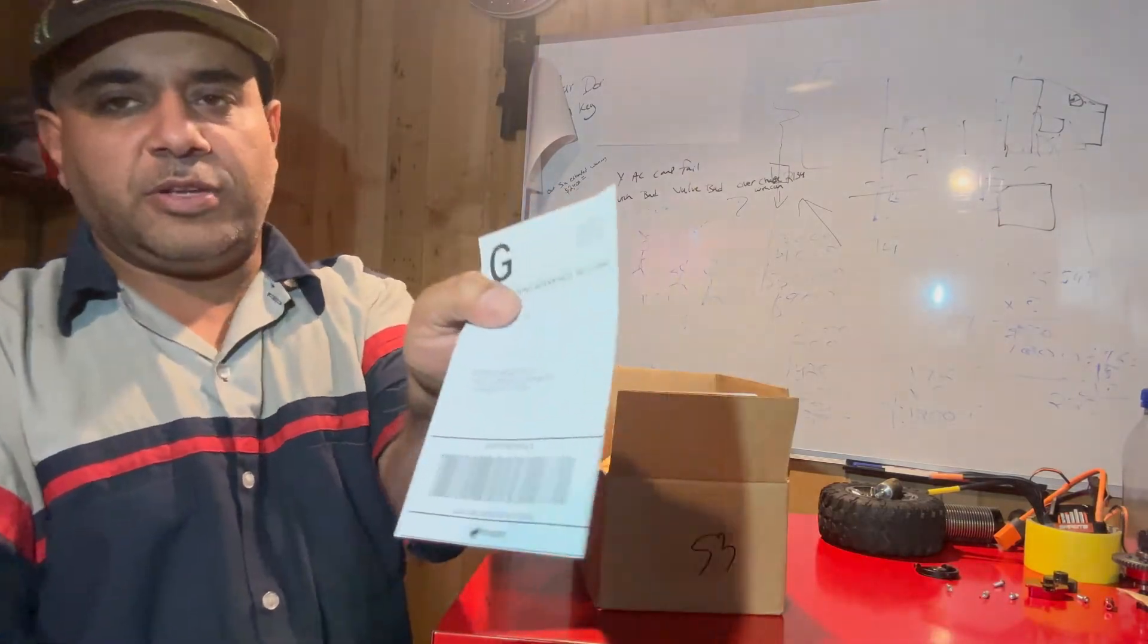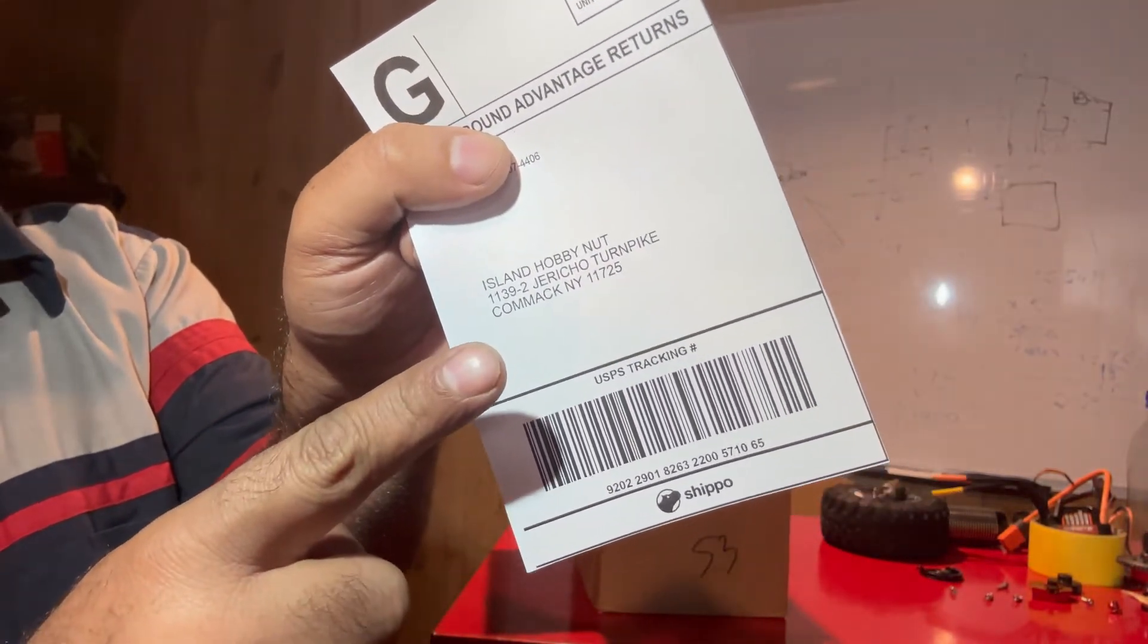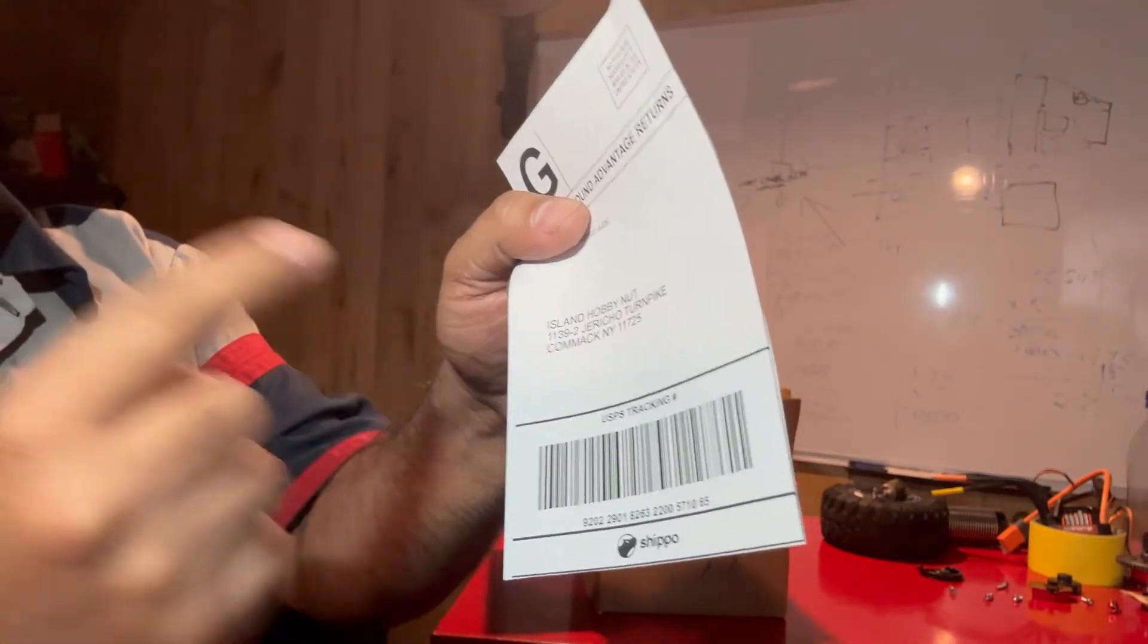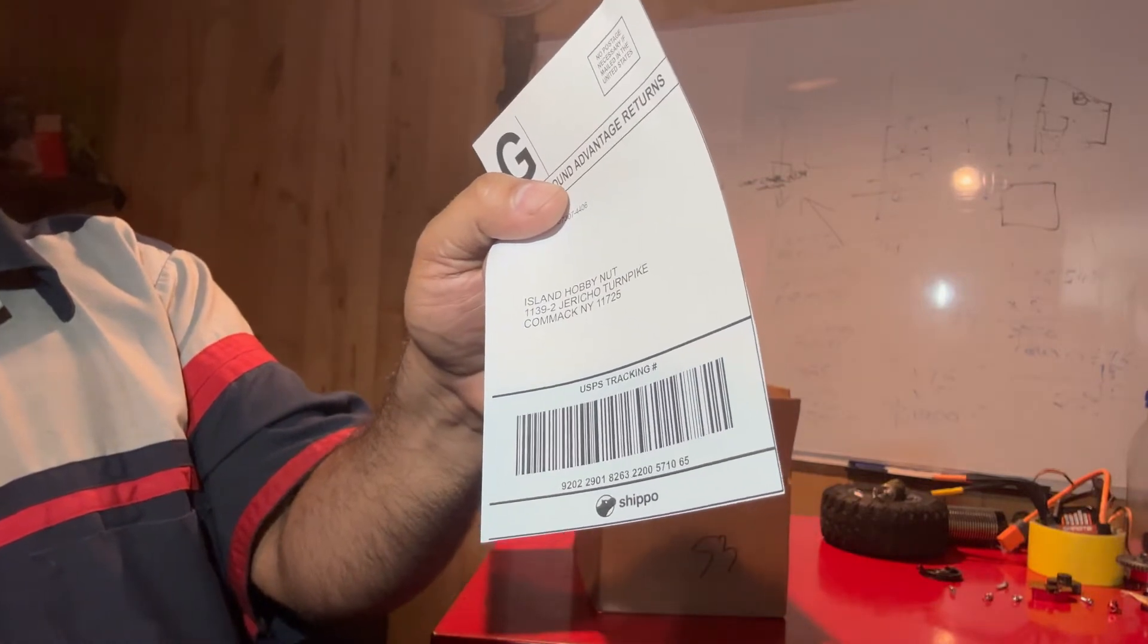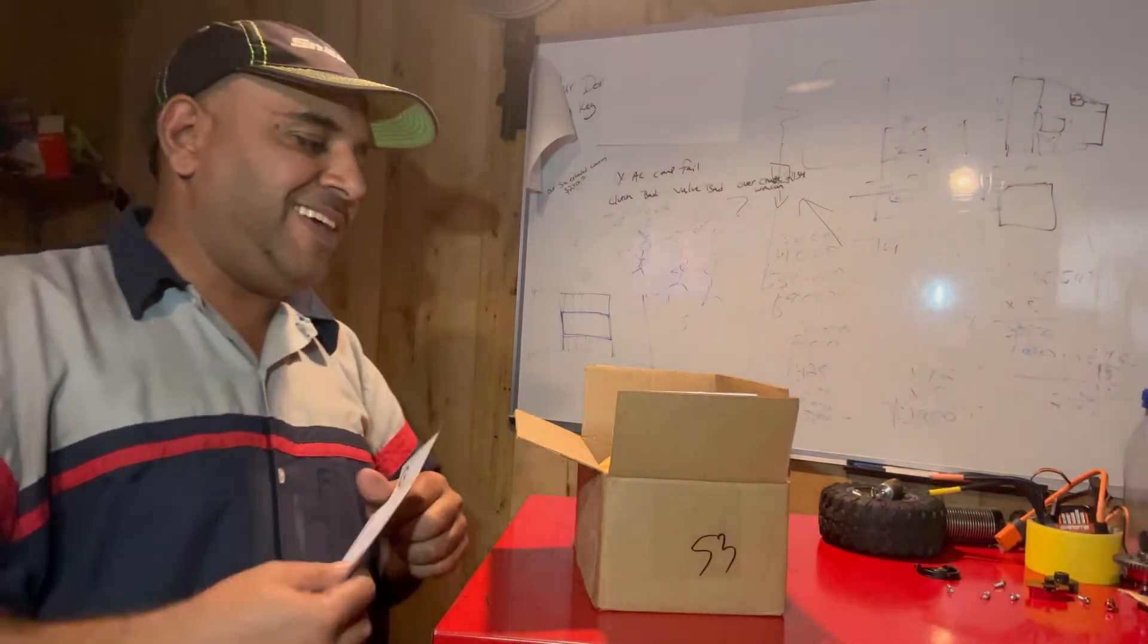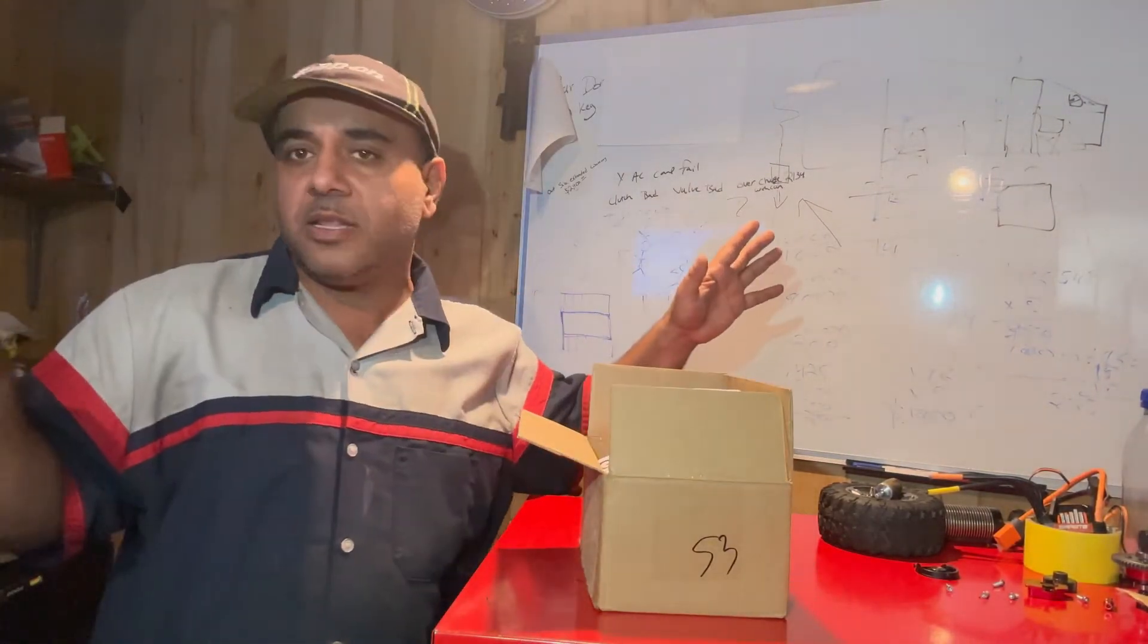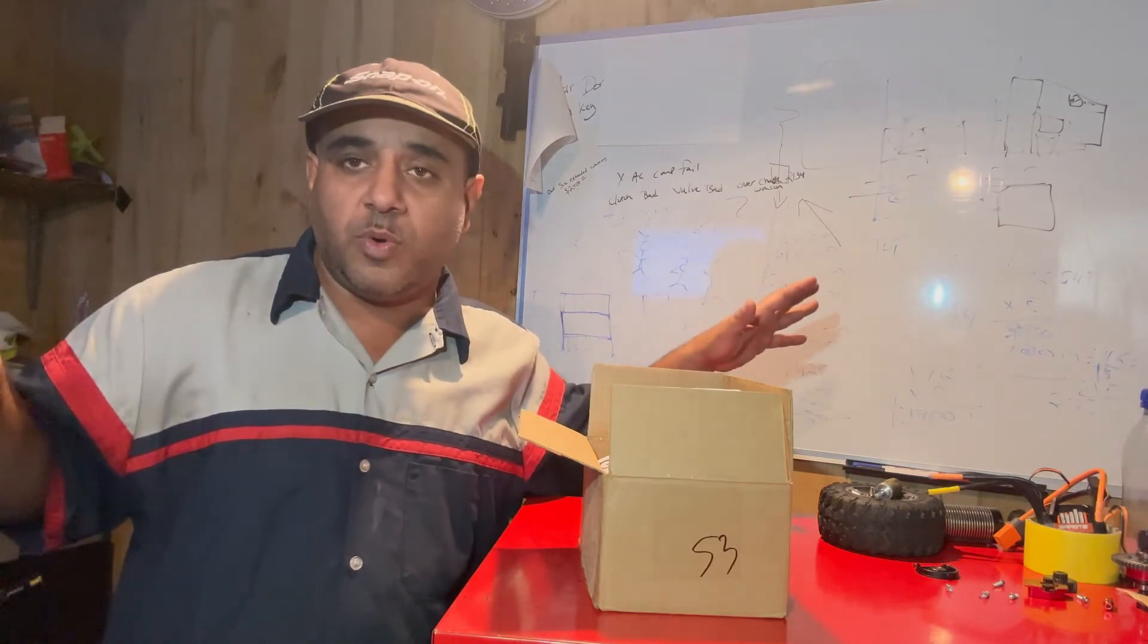If you guys need to get into contact with Aussie, that's his address right there. Island Hobby Nut is the shop name. You guys can track it if you want, but anyways, it's going back, packaging, and then that's it. Done with this motor, don't want nothing to do with this motor. I want the motor that I actually ordered.